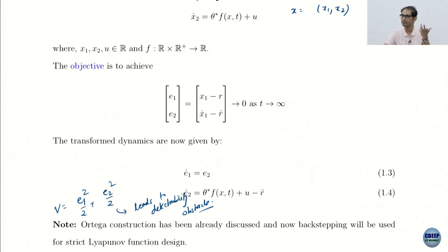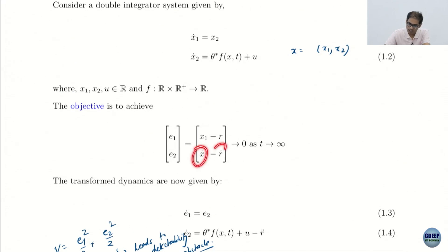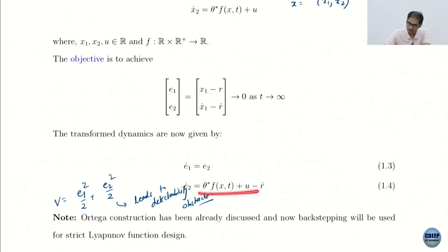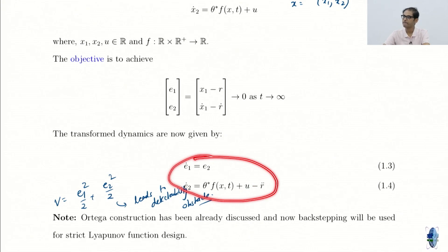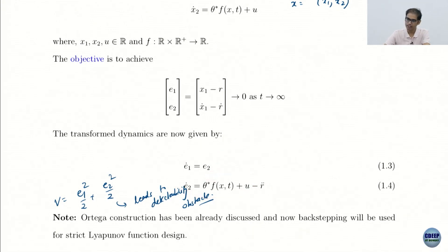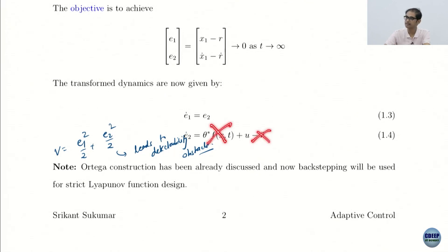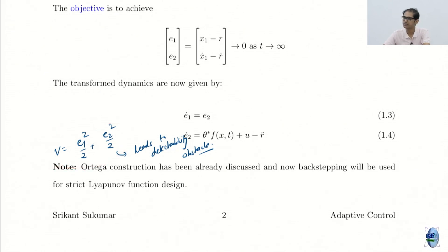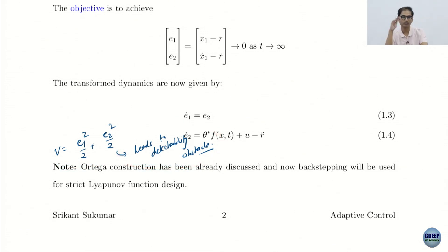We construct the error and write the error dynamics. E₂-dot is x₂-dot (which contains θ*f(x,t) + u) minus r-double-dot. This gives the new dynamics we are working with — there is still an unknown. If we did not have the unknown, we would simply cancel the known terms and introduce the nice terms we want. The standard E₁² + E₂² Lyapunov function is bad for this system — it leads to a detectability obstacle. We use backstepping to construct the Lyapunov function.